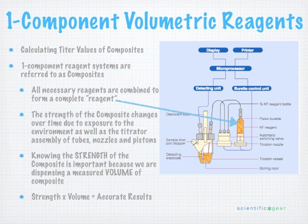In a volumetric system, because we are using a volume to determine our actual water content — in other words, we're measuring the volume of reagent it takes to titrate that water — we have to be very precise to know that the reagent is at the known concentration we've stated. Once it changes, that's going to affect our result.